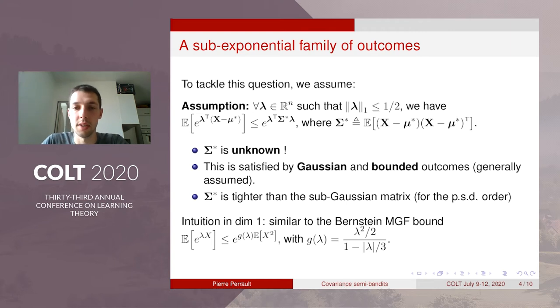So as I said the sigma star is a tighter quantity than the sub-Gaussian matrix with respect to the positive semi-definite order. So this means that making this matrix appearing in the regret bound is better than the usual sub-Gaussian matrix.